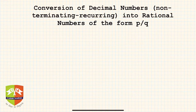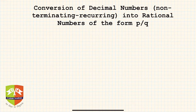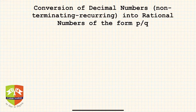Continuing from the previous session, we are going to deal with conversion of decimal numbers — non-terminating recurring — into rational numbers of the form p by q. In the last session we saw how to convert a terminating decimal into a fraction, that is a rational number. For example, we saw how 0.5 became 5 upon 10, which simplifies to 1 by 2.